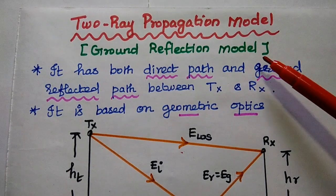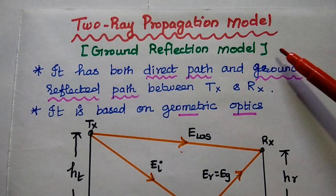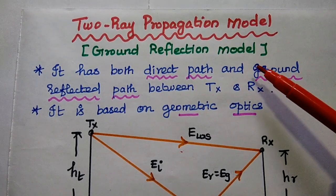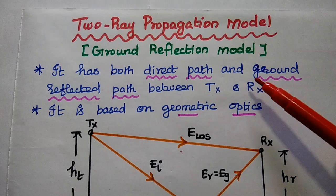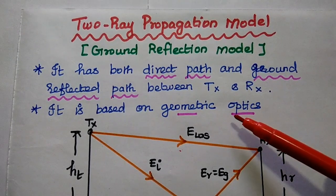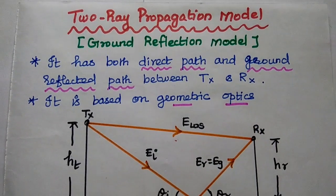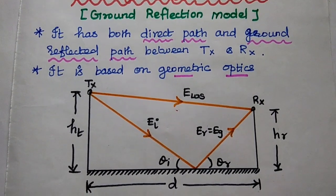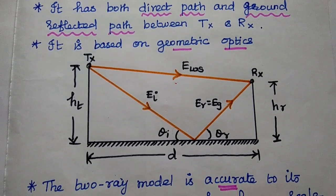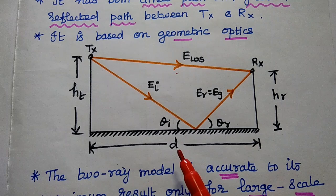Now we are going to discuss the 2-ray propagation model in detail. This model is also called the ground reflection model because it has both a direct path and a ground reflected path between the transmitter and receiver. This model is based on geometric optics. Here is the diagrammatic representation of the 2-ray propagation model.